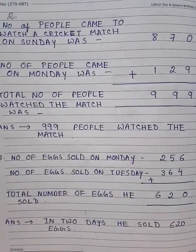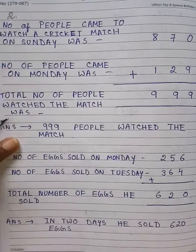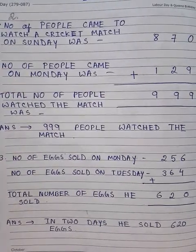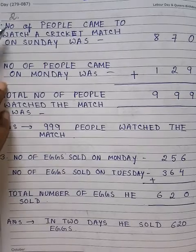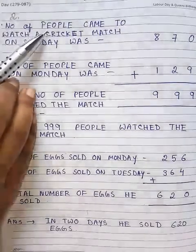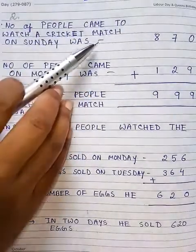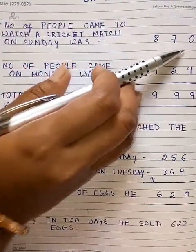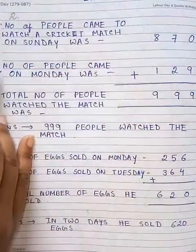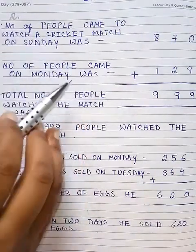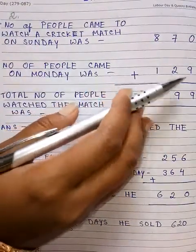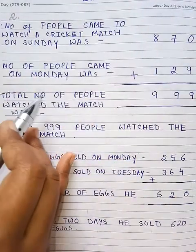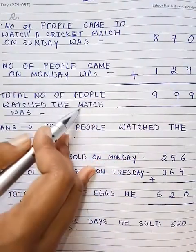Now I am giving you another form of how you can write the statement. If you want to write in this way, you can follow. First: number of people who came to watch a cricket match on Sunday was 870. Number of people who came on Monday was 129. We are finding the total number of people who watched the match.